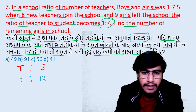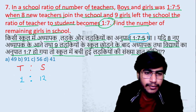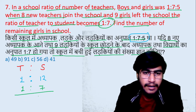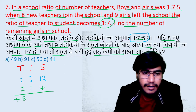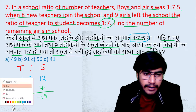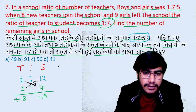Aage dekhte hain — ab aage kya karte hain? Final ratio likhte hain. Final ratio kya diya? 1 ratio 7. Theek hai? Aur hua kya hai? 8 naye teacher aa gaye hain aur 9 girls kam ho gayi. Theek hai? Yahan tak koi dikkat nahi. Ab kya karte hain? Ab multiplication. Income multiply karenge — 12 ko 7 se multiply karenge, bachenge kitne? 5.